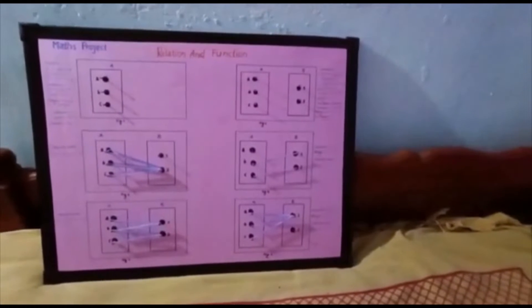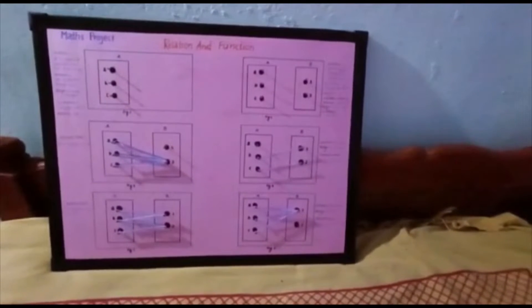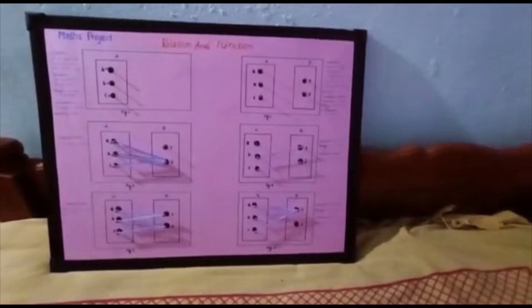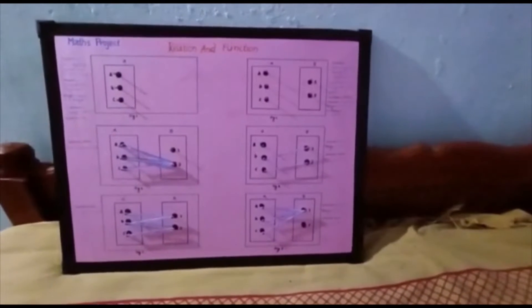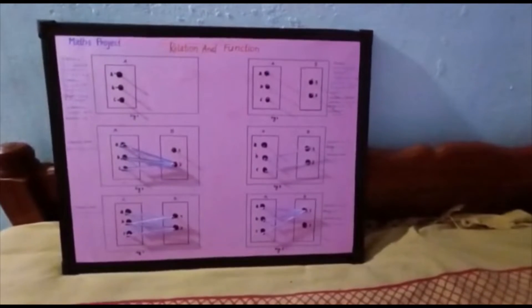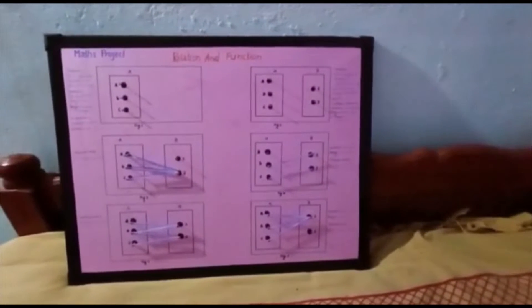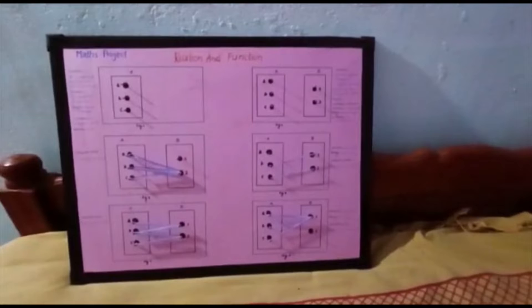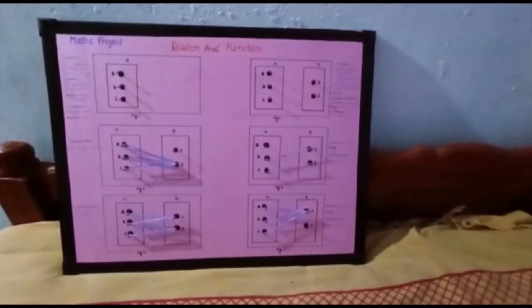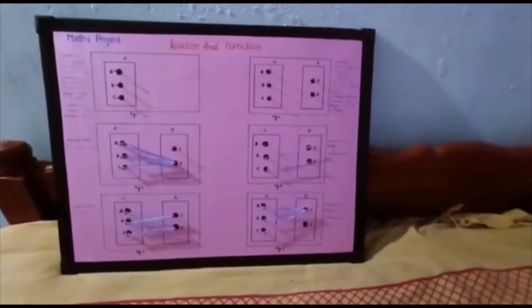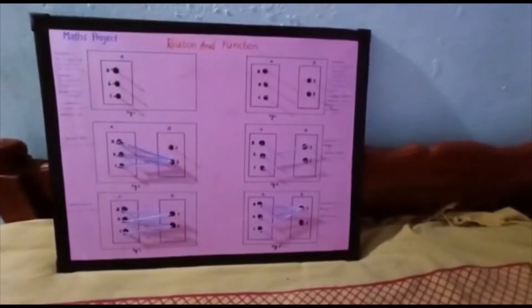This is my model on the topic of relation and function. A relation is defined between two sets, set A and set B. The domain of a relation is the set of all pre-images on set A, and the range is the set of all images. The co-domain of a relation is the complete set B, such that all elements of set B are called its co-domain. The maximum number of relations between two sets is equal to the Cartesian product, which is the number of all elements in A times the number of all elements in B.